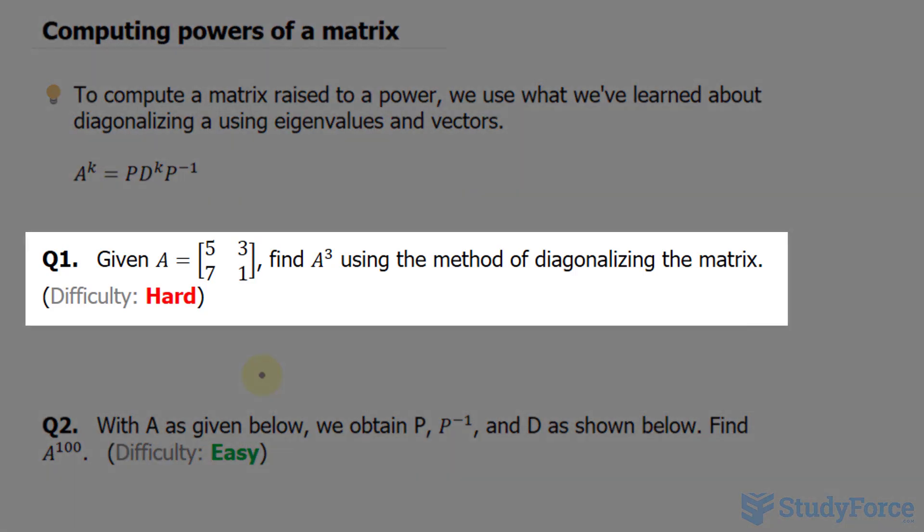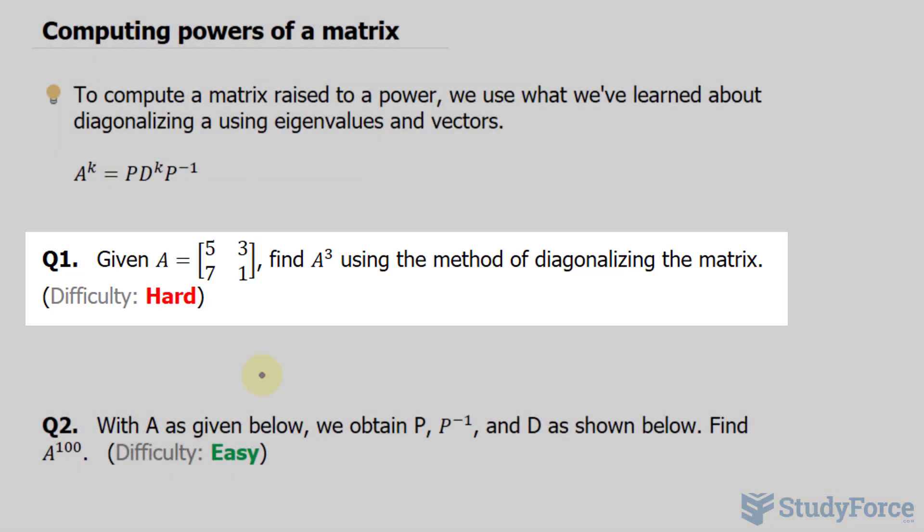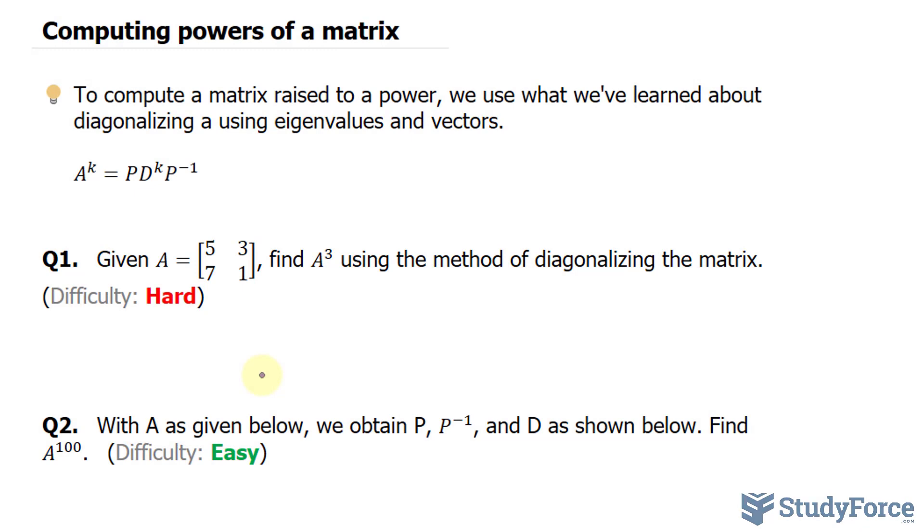So the question is, given the matrix A, find A raised to the power of 3 using the method of diagonalizing the matrix. I've given this question a difficulty rating of hard, because there's a lot of work involved. We have to start off by finding the eigenvalues, then the eigenvectors, and then, using the eigenvectors, produce the matrix P, find its inverse, and multiply it to the diagonal raised to the power of 3. It's a lot of work, and here's how it's done.